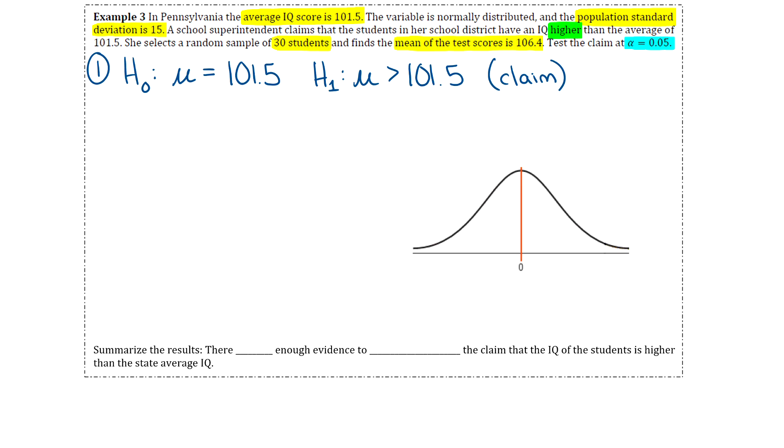Step two says that we need to find the critical values. The critical values are going to come from those common critical values that were on your notes from last section. You need to know two things to get your critical value: your level of significance, so alpha is 0.05, and what type of test it is. Since the sign in the alternative is a greater than sign, that tells us it's going to be a right-tailed test.